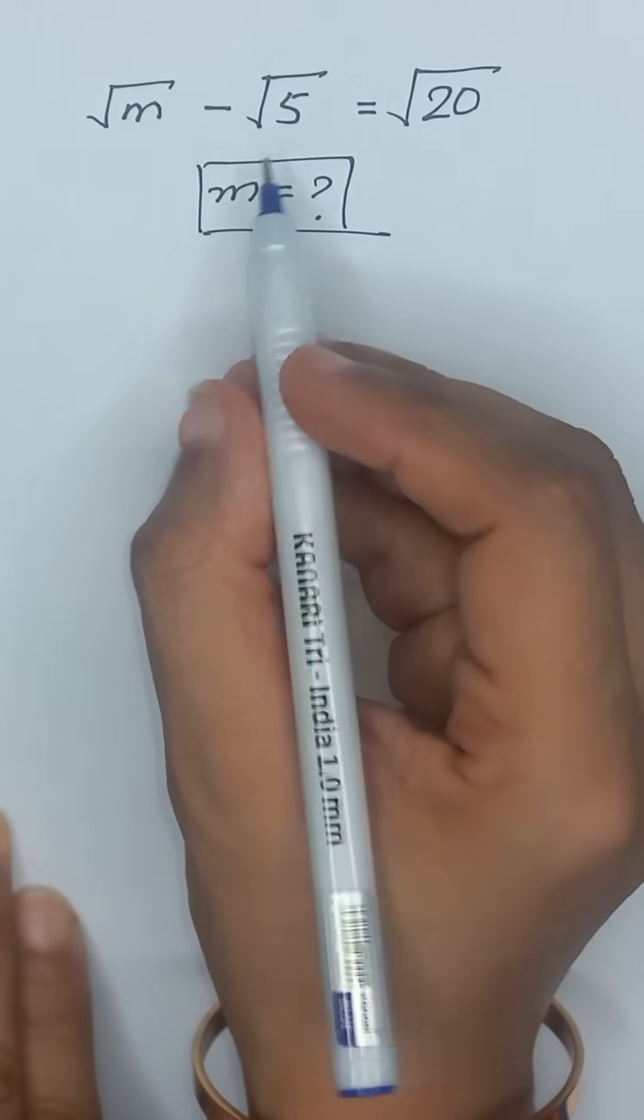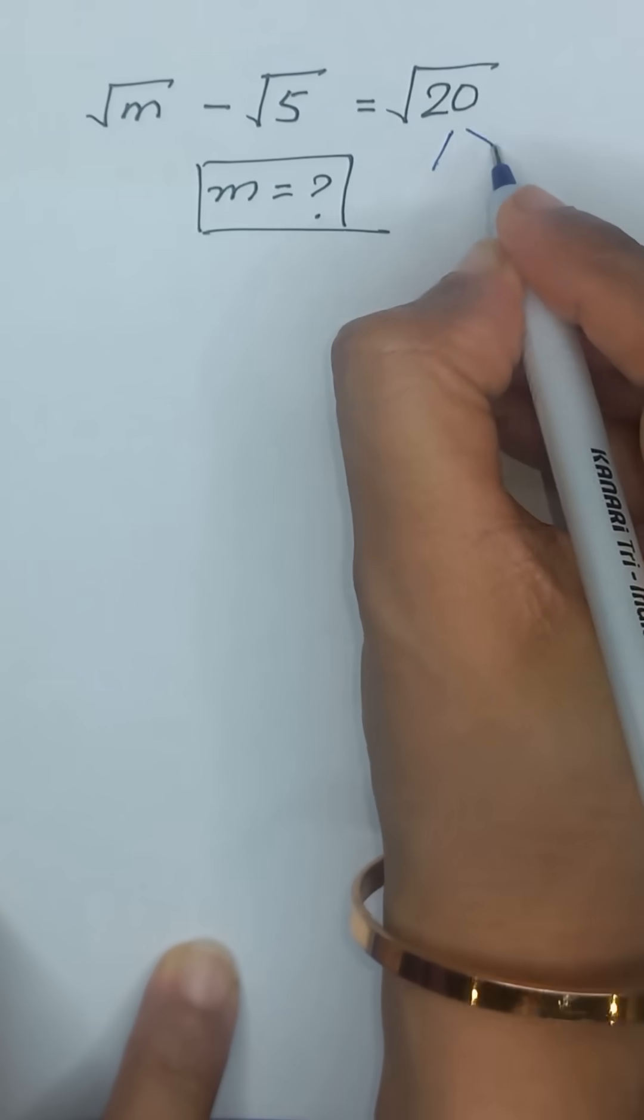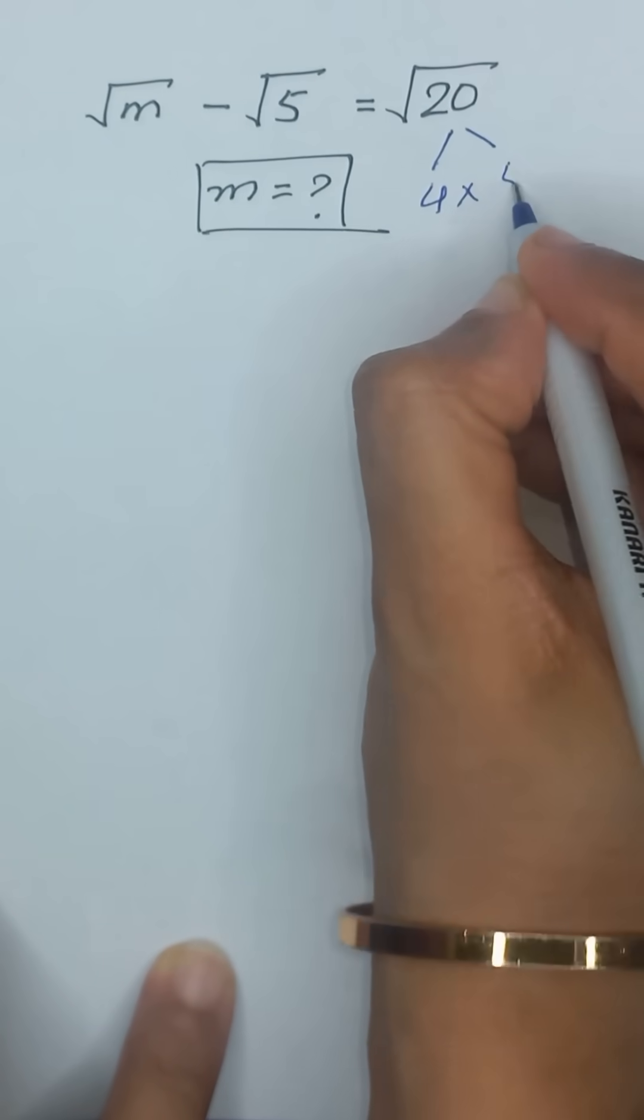Square root of m minus square root of 5 is equal to square root of 20. And this 20 is same as 4 times 5.